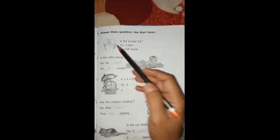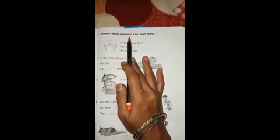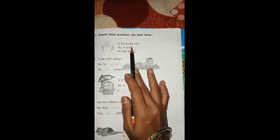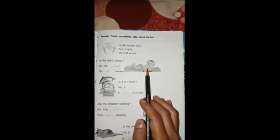Okay children, come to the exercise. Here, answer these questions using short form. One question is given with answer: Is the bucket full? You can see, is the bucket full? No, it is not. It's half empty. Now second: Is the child asleep? Here you can see a child, a boy, so we will use 'he,' and 'he' always we will use 'is.' So, he is not, he is awake.